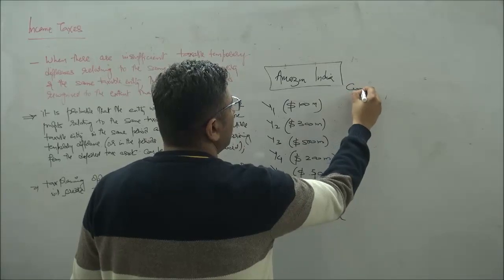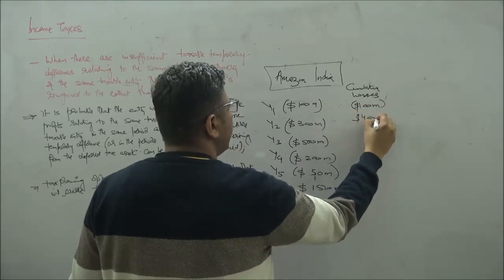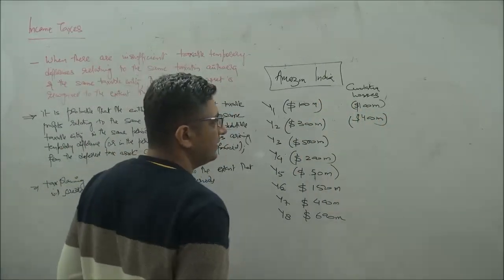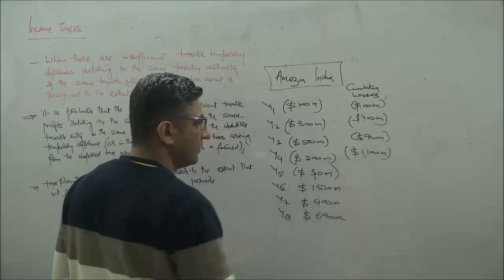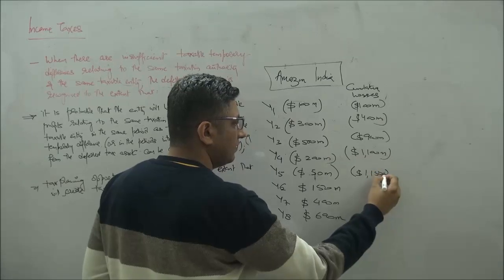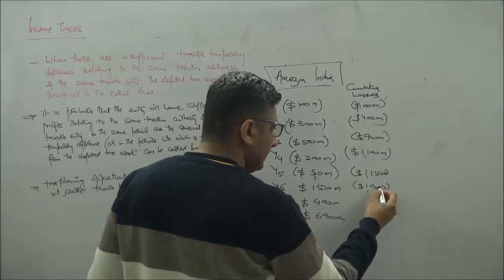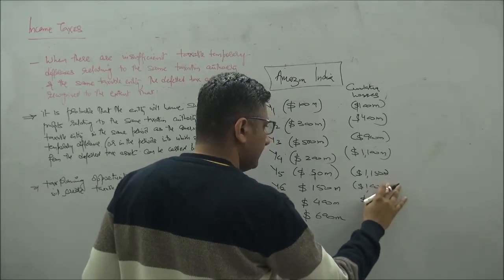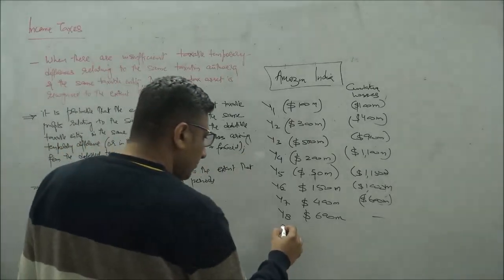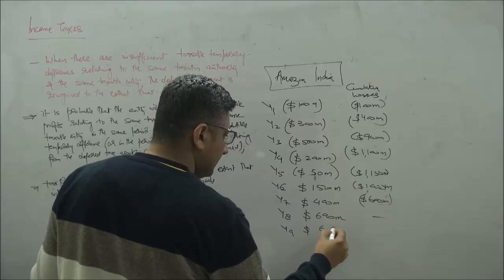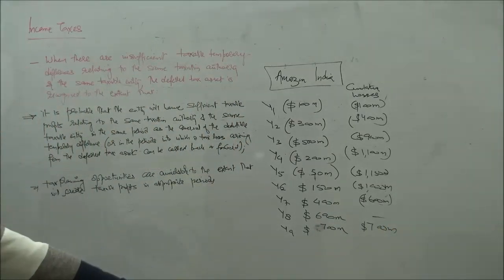When you look at the cumulative values: the cumulative losses — year two is 100 million, year three is 400 million (100 plus 300), year four becomes 900 million, year five becomes 1.1 billion. Year six is 1.15 billion, year seven becomes 1 billion as you start making money, year eight is 600 million net loss, and it reaches zero. In year nine you would have profits of perhaps 700 million, so cumulatively you are making a profit of 700 million at the end of year nine.